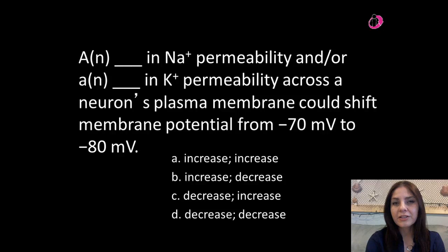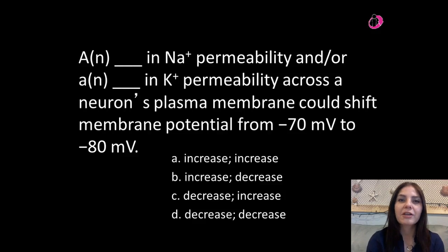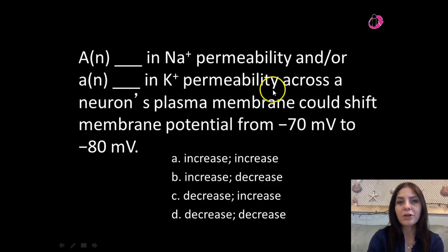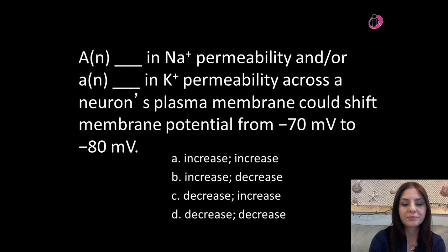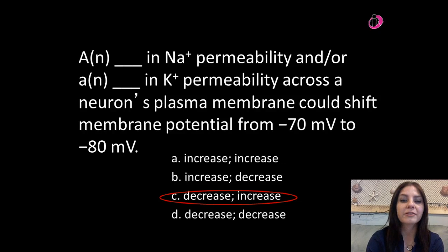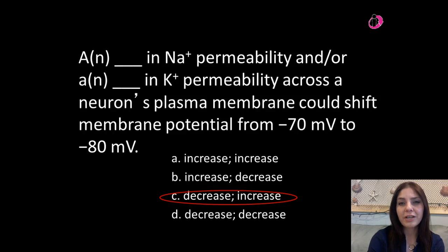The next couple of slides contain terms and information you need to write down in your notebook for free response questions. If you chose answer C, you're correct. A decrease in sodium permeability and an increase in potassium permeability across a neuron's plasma membrane could shift the membrane potential from negative 70 millivolts to negative 80 millivolts.